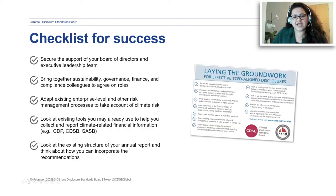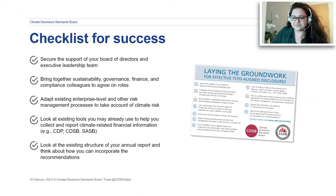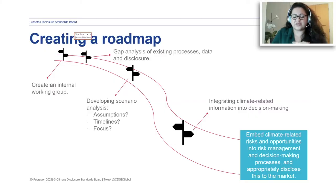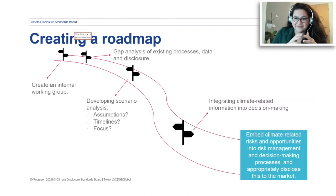At CDSB, we designed a checklist for success with 11 elements — we'll send a link to this checklist after the webinar so you can go through it for your own organization. One of the most important things is to create a roadmap: think about how you're going to get from where you currently are to fully embedding climate-related risks and opportunities into both your risk management processes and governance. To do that, you should assess where you are — perhaps by creating an internal working group and conducting a gap analysis of what you already have.